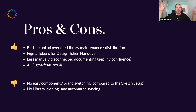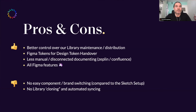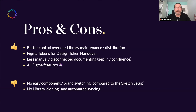We had a whole Dropbox Paper with lists of what we want and what features we need. In the end we came to a conclusion. The pros: better control over library maintenance — distribution is much easier in Figma. And of course Figma Tokens for design token handover using Style Dictionary — that wasn't something we could do within Sketch at that time. Less manual and disconnected documenting — the Zeppelin thing had a plugin, but Confluence required manual updates which could end up with errors when not matching the components in the design tool.